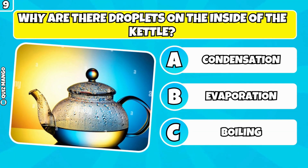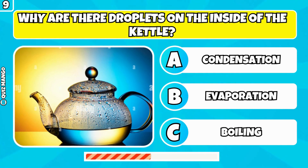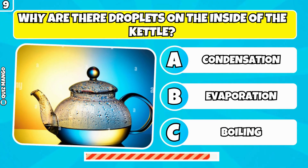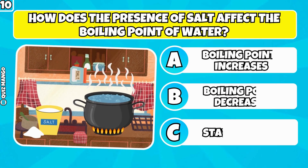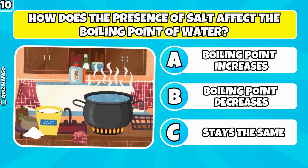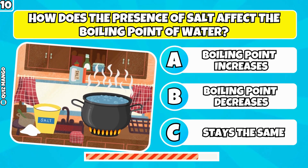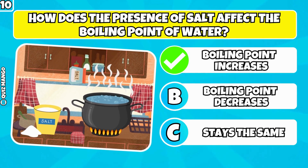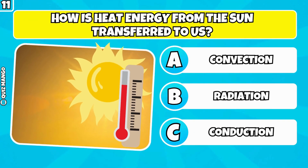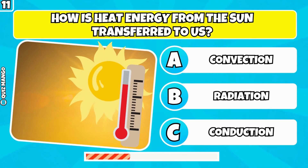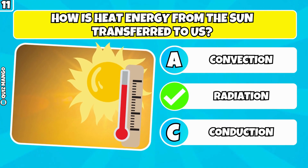Why are there droplets on the inside of the kettle? It's condensation. How does the presence of salt affect the boiling point of water? The boiling point of water increases. How is heat energy from the sun transferred to us? It's radiation.